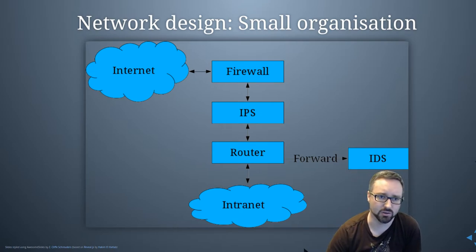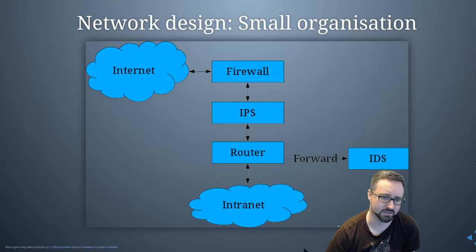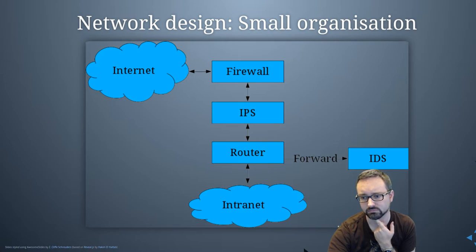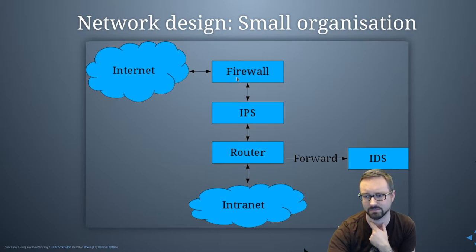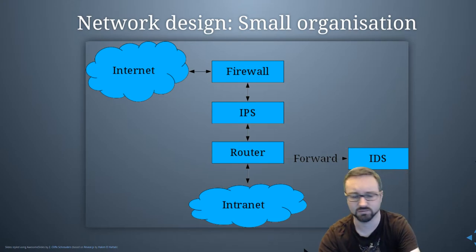Your internal network, your intranet, is attached to the router. You could add or remove the IPS or the IDS into different parts of the diagram. If you want an IPS it needs to be inline so it can do something about what's happening, whereas an IDS can sit somewhere else and have information forwarded to it.